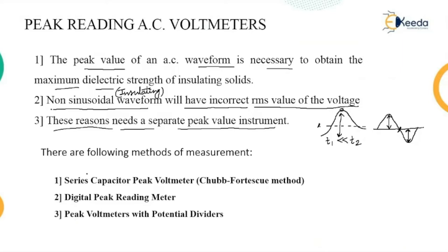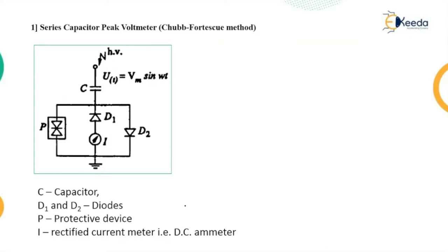There are a few methods shown here: series capacitor peak voltmeter, where the capacitor is connected in series with the voltmeter — it is developed by Chubb, and therefore the method is named after him. Another is called the digital peak reading meter, and the third one is peak voltmeters with potential dividers. Let us start with the first method, that is series capacitor peak voltmeter, also called as the Chubb voltmeter method.